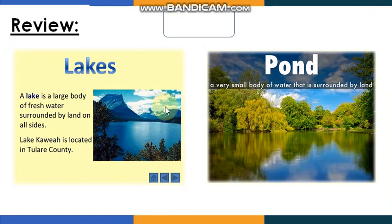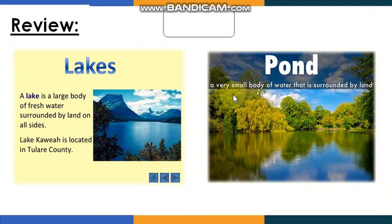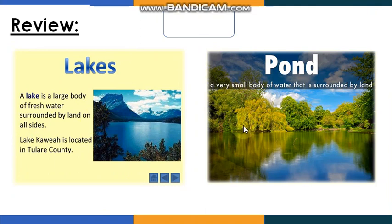I can see two pictures — the first has a lake and the second has a pond. Well done! Let's read: 'A lake is a large body of fresh water surrounded by land on all sides. A pond is a very small body of water surrounded by land.' Remember: both are the same but lakes are much bigger than ponds, and both have fresh water surrounded by land on all sides.